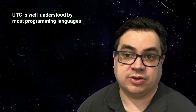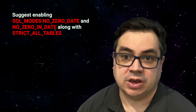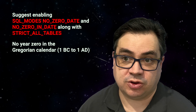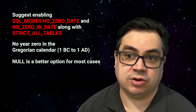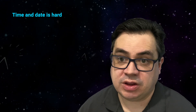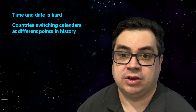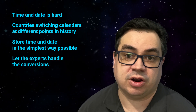UTC, whilst having quirks, is very well understood by the standard libraries in pretty much every programming language. They all have conversion functions to any time zone based on the open-source time zone information the operating system manages and keeps up to date. As a side note, I highly recommend enabling MariaDB's SQL modes: no zero date and no zero in date, along with strict all tables. In the Gregorian calendar, which is the calendar most of us and MariaDB data types use, there is no year zero — it goes from 1 BC to 1 AD. A null is likely a better option for most cases where you'd want to use a zero date, so a zero date is likely bad data, and in many cases it's better to error on bad data than allow it. In summary, time and date can be really hard, which is why I always recommend storing time and date in the simplest form possible and letting experts who dedicate their lives to getting this right handle the conversions for you.